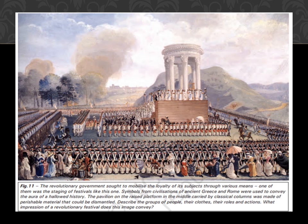Here we have a picture. The revolutionary government sought to mobilize the loyalty of its subjects through various means, one of them being the staging of festivals like this one. Symbols from civilizations of ancient Greece and Rome were used to convey the aura of a hallowed history. The pavilion on the raised platform, carried by classical columns, was made of perishable material that could be dismantled. Describe the groups of people, their clothes, their roles and actions — we will discuss this figure in our next class.